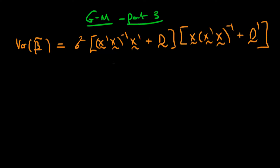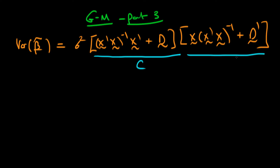Welcome to the final part of our proof of the Gauss-Markov theorem in matrix form. At the end of the last video we had that the variance of beta tilde was equal to some matrix C times its transpose C primed, all pre-multiplied by the constant sigma squared.